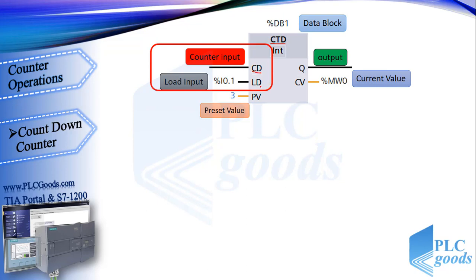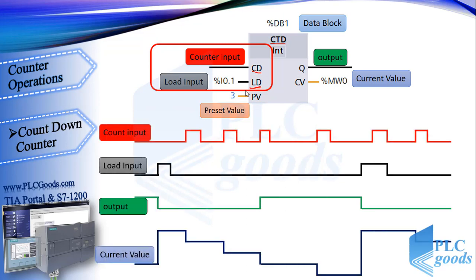It counts from the preset value to 0. See this diagram. At the first time, the output is on. This counter has a load input instead of reset. When the RLO at this input changes to 1, the preset value is loaded into the current value and the output will be off. Then with each positive pulse at the counter input, the current value decreases one step until it reaches 0.